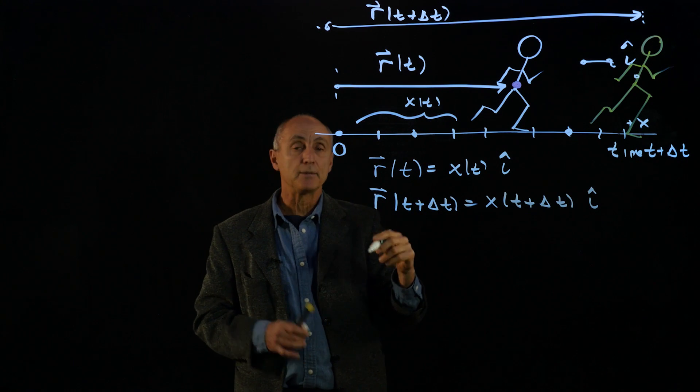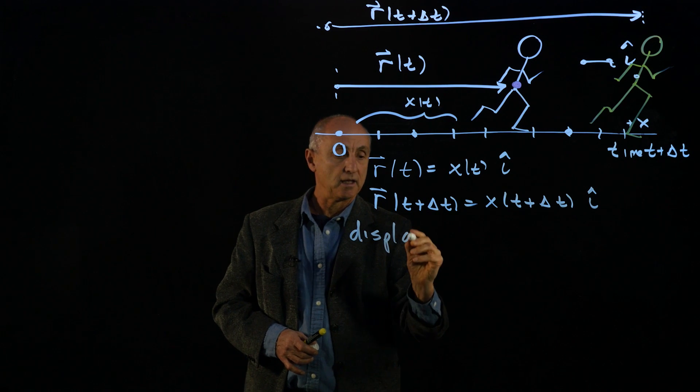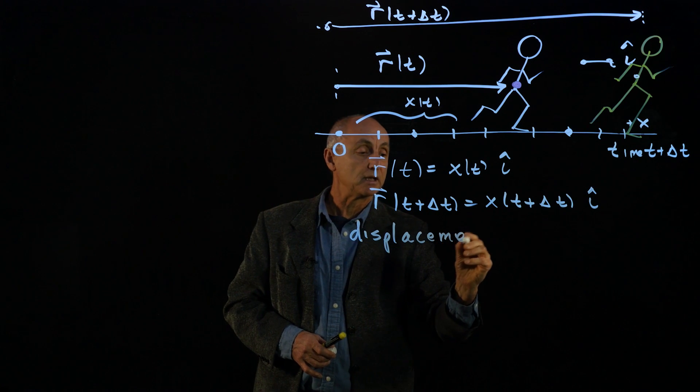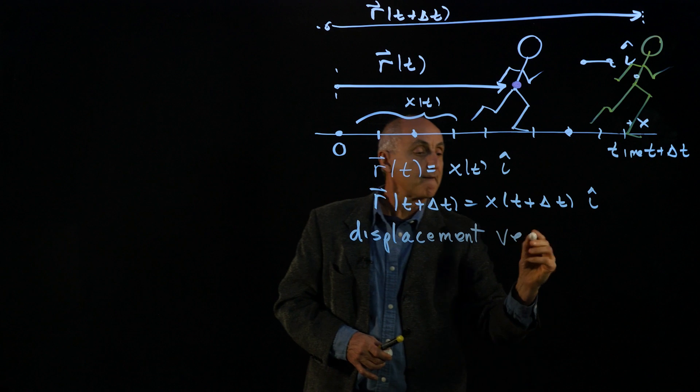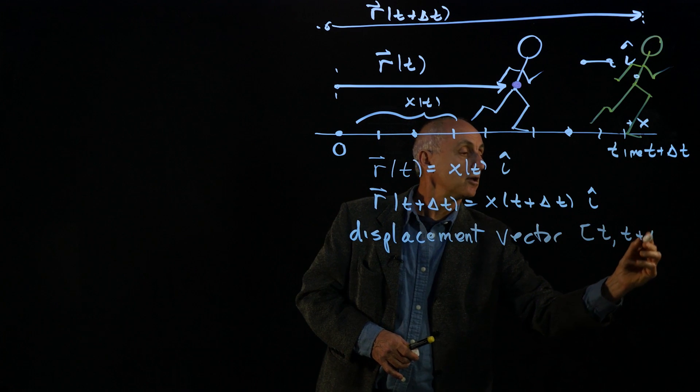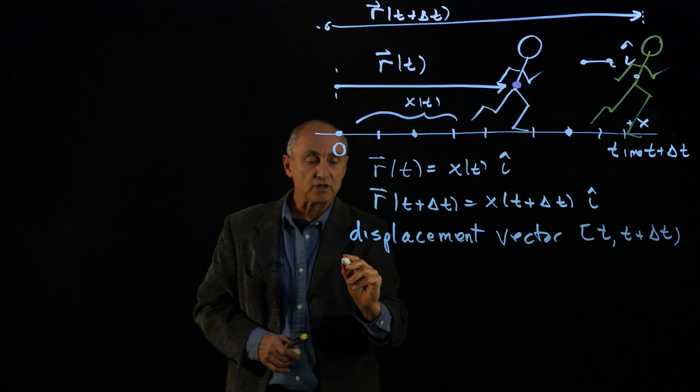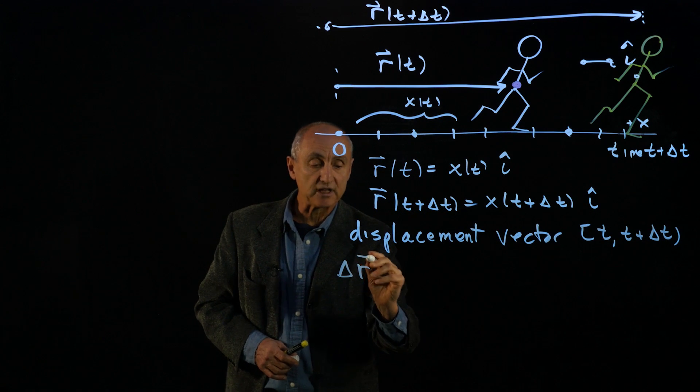And we would now like to describe the displacement vector. So our next step is to describe the displacement vector for the interval t to t plus delta t. And that displacement vector is defined, we use the symbol delta r.